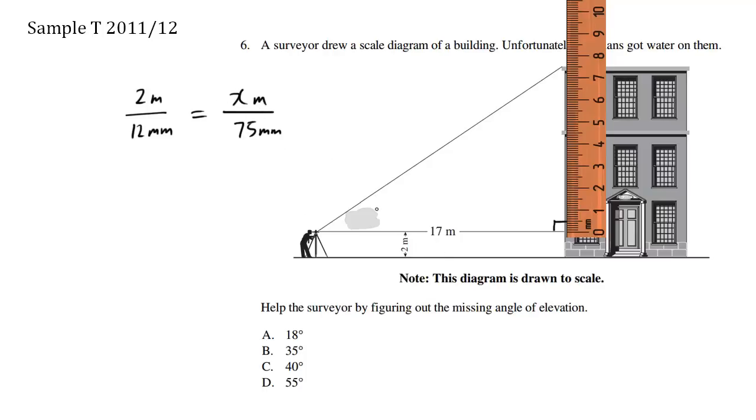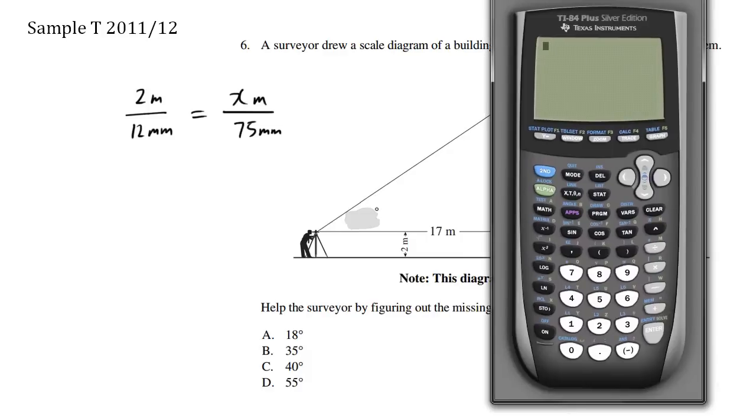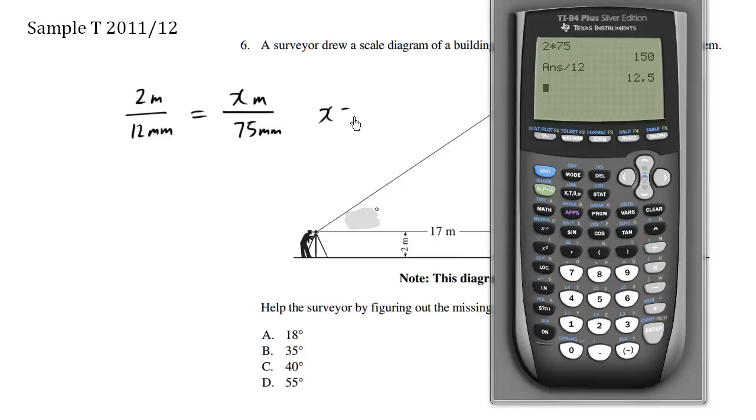So using our calculator, we multiply 2 times 75. I'm doing cross multiplication. Equals 150. And then I'm going to divide by 12 because I'm multiplying this way. Divide by 12, this here is solving for x. So x here is 12.5. So x equals approximately 12.5 meters.